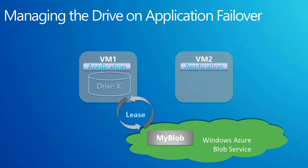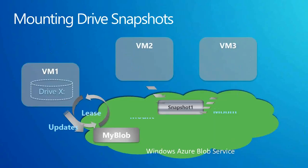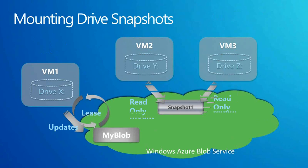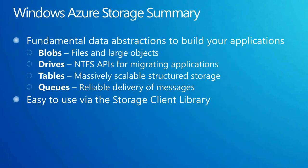I'm going to skip the drive failover scenario since it's not commonly used for games. To summarize the fundamental storage abstractions: we have blobs, drives, tables, and queues. We can use the storage client library to access these scenarios and also via APIs. For blobs, use them for images, videos, and text. Use tables for structured storage — not for relational needs. Use queues for messages.